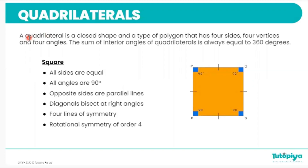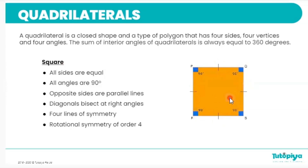One of the most well-known quadrilaterals is the square. In a square, each side is the exact same length — they are equal. Each angle in a square is a right angle of 90 degrees. Opposite sides are always parallel to each other, as shown by the red and blue lines. If I draw the diagonals of the square — lines connecting opposite vertices — these diagonals bisect each other at right angles.